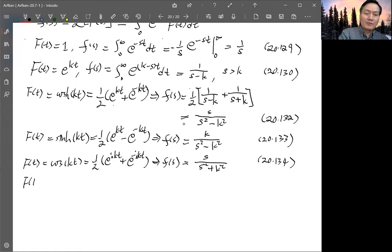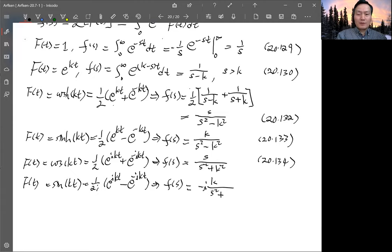And for sine(kt), now is 1/(2i) (e^(ikt) - e^(-ikt)), F(s) is now like sinh. I can change, divide by i, so I get k/(s^2 + k^2). Actually since k changed to ik, minus i becomes one. So you actually don't need the minus. This is equation 20.135.